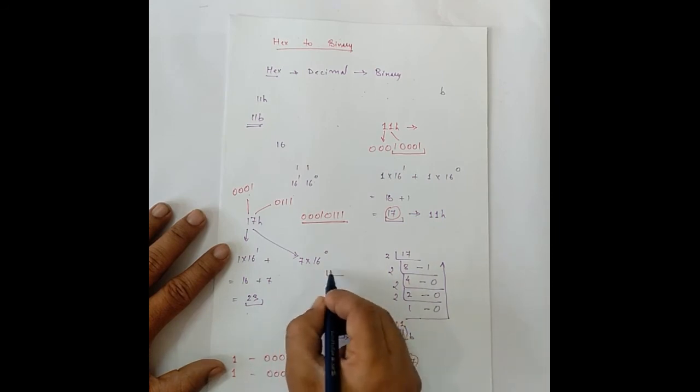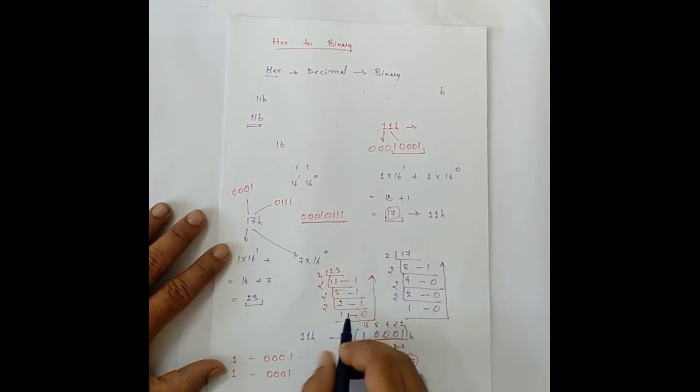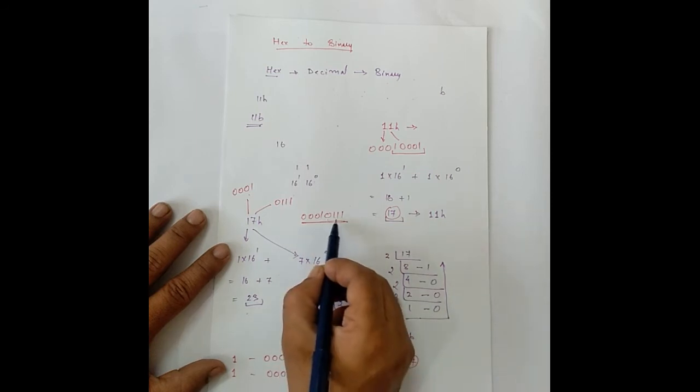So, if we convert 23 by 2, it gives us 11 times remainder 1, 5 times remainder 1, 2 times remainder is 1 and then 2 1 times remainder is 0. So, we have 1 0 1 1 1.